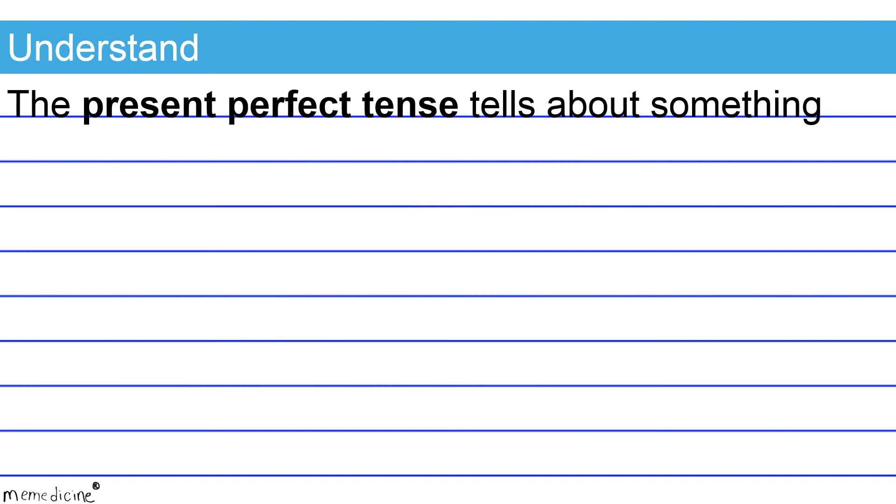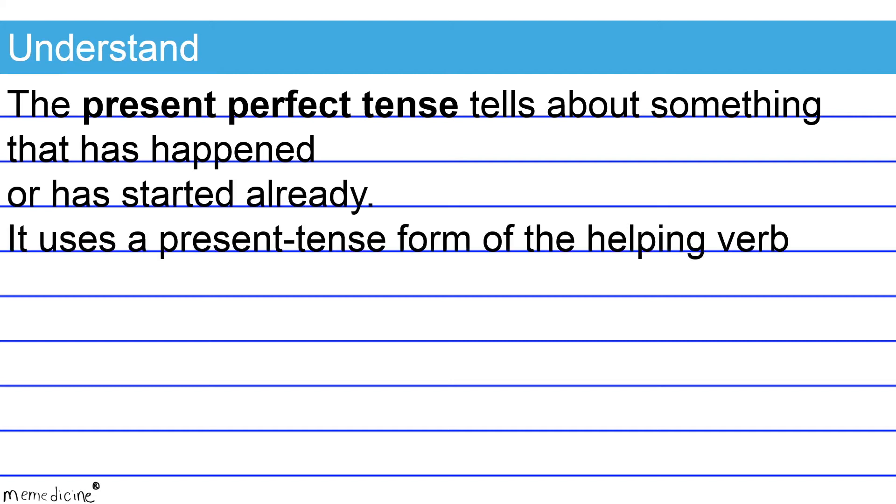The present perfect tense tells about something that has happened or has started already. It uses a present tense form of the helping verb to have, which is either going to be has or have. Note that has corresponds to third person singular subjects. And have will be paired with the first person singular pronoun I, the first person plural pronoun we, the second person singular pronoun you, and all third person plural pronouns.